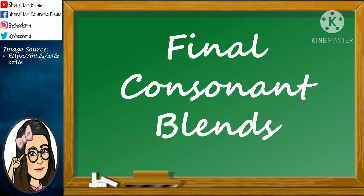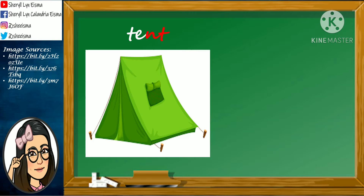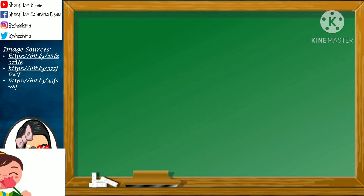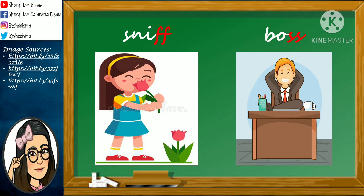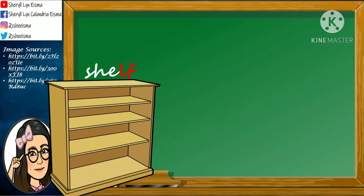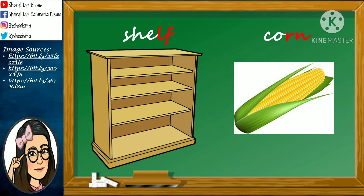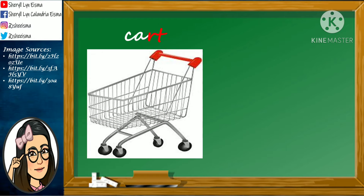Now let us look at some examples of words with Final Consonant Blends: Tent, Lamp, Ball, Shell, Corn, Blood.